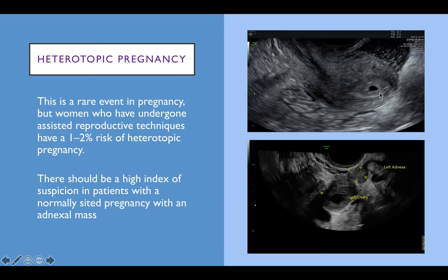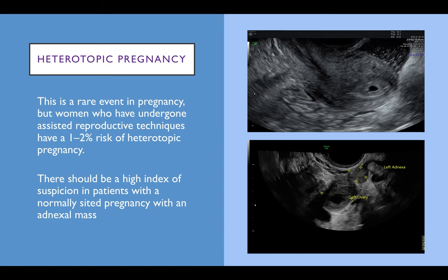Here we can see a retroverted uterus with a very small and early normally sited probable gestational sac — in keeping with about 5 weeks gestation — and a small amount of free fluid with low-level echoes in the pouch of Douglas. The woman presented with pain in early pregnancy. We can see the left ovary with a corpus luteum and a very small mobile mass. Because of her symptoms and scan findings she was taken to theatre, had a left salpingectomy, and histology confirmed a coexisting ectopic pregnancy. If you see two corpus lutea in both ovaries, an extra look to exclude a coexisting tubal ectopic is important.